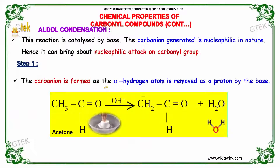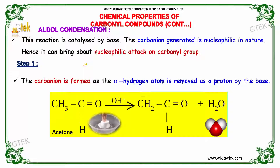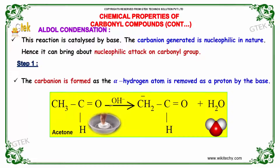Aldol condensation: This reaction is catalyzed by base. The carbanion generated is nucleophilic in nature, hence it can bring about nucleophilic attack on a carbonyl group. Step 1: The carbanion is formed as the alpha hydrogen atom is removed as a proton by the base. When acetone is made to react in the presence of OH⁻, it produces the carbanion along with water as a byproduct.